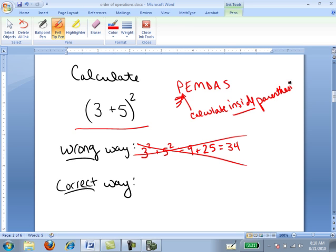So the very first thing I need to do is actually calculate 3 plus 5 to get 8. So what's inside the parentheses is actually 8, and that is being squared. And so (3 + 5)² is actually 64, and that's the correct way to perform the calculation.